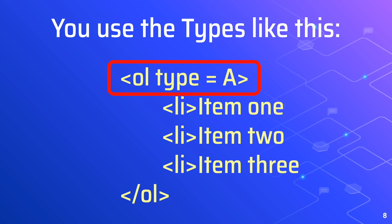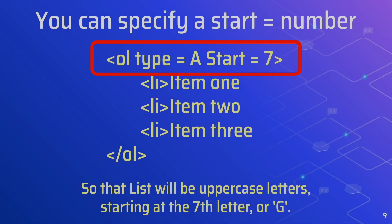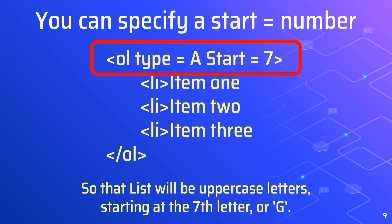You can specify a start as well, but the start has to be a number. For example: OL type equals A, that's capital letter, and we can start with, let's say, 7. We have the list items and the closing OL tag. So that list will be only uppercase letters starting at the 7th letter, or G, since we indicated to start with number 7.